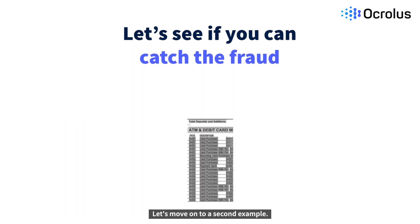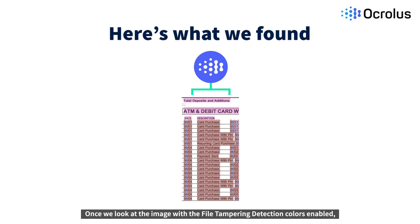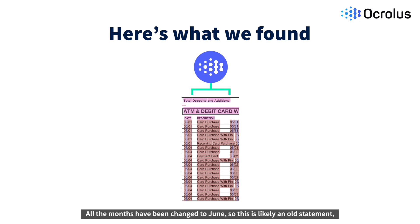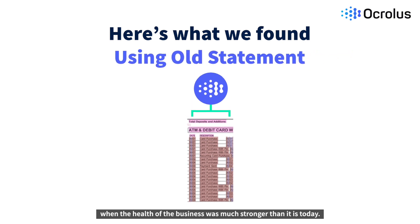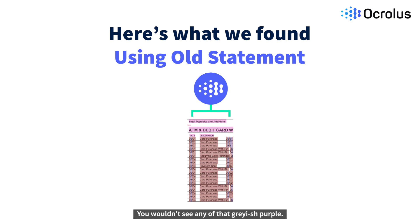Let's move on to a second example. Here's what we found in this instance. Once we look at the image with file tampering detection colors enabled, we can see that it's a valid statement, but it's not for this month. All the months have been changed to June, so this is likely an old statement when the health of the business was much stronger than it is today. If this was all edited by the bank, everything below the pink headers would be in that red-orange-ish color — you wouldn't see any of that grayish purple.